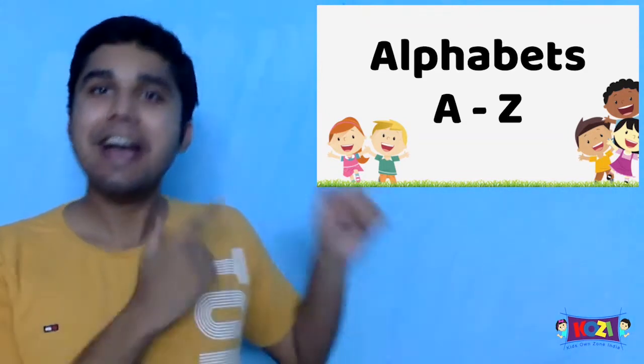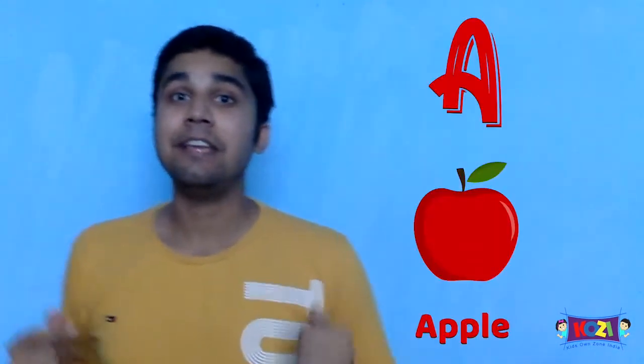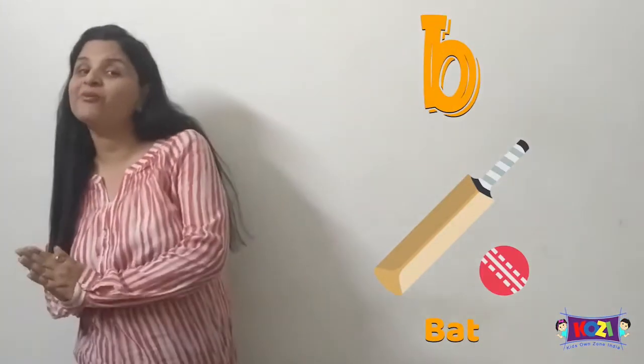So let's start Alphabets. A for apple, A for aeroplane. B for fly and B for bat.